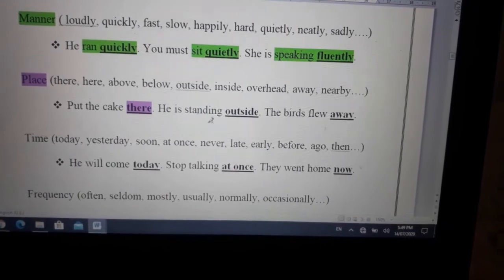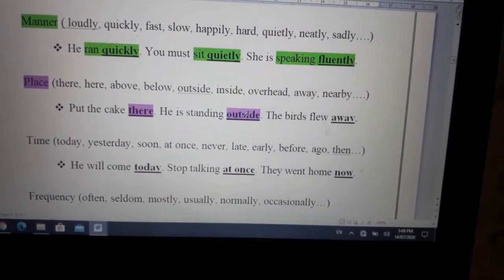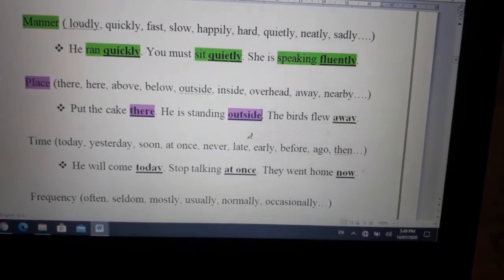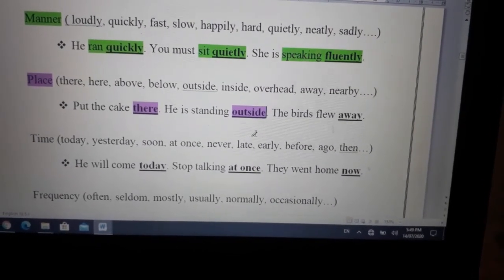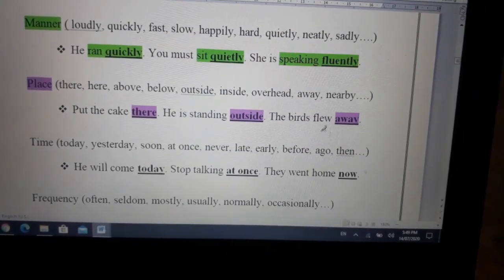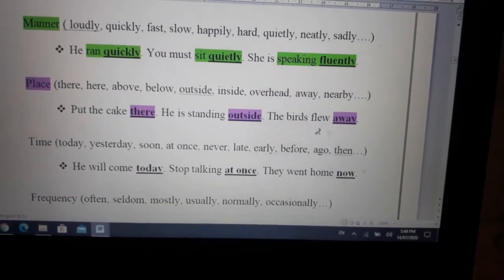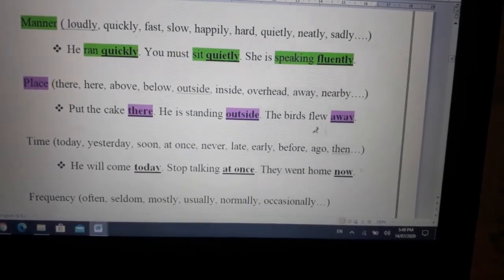Where is he standing? He is standing outside. Outside is your adverb of place. Then, the birds flew away. Where did the birds fly? The birds flew away.